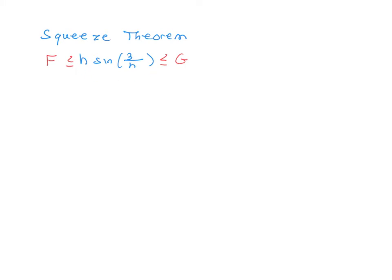Another important fact is that if you look at sine of any angle, it's always trapped between negative 1 and positive 1. So this will be important here. How do we actually come up with these two functions? I'm going to start by looking at sine of 3 over h and building from there.